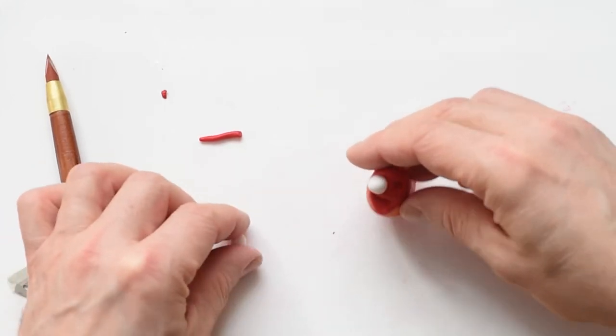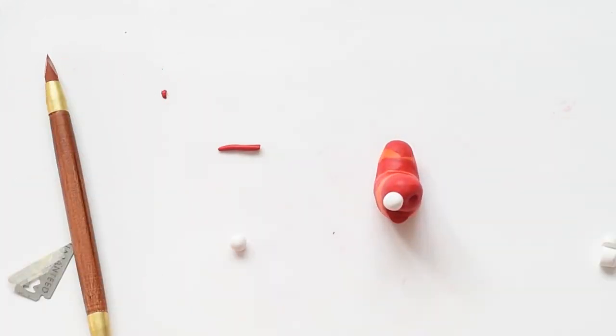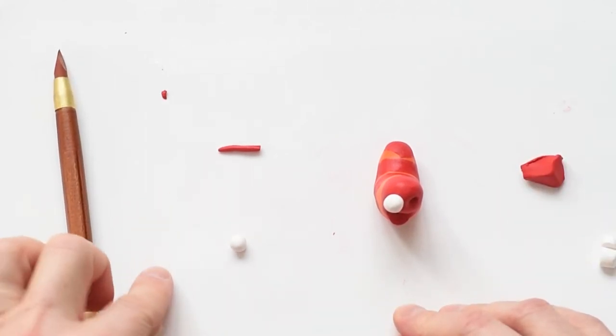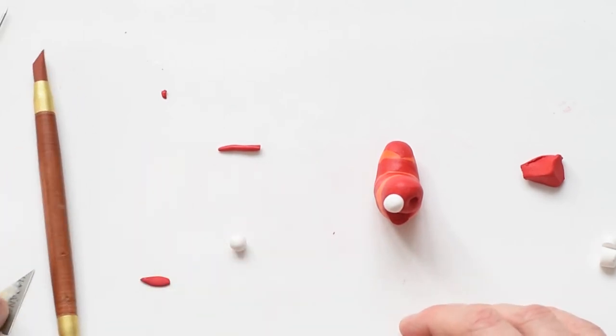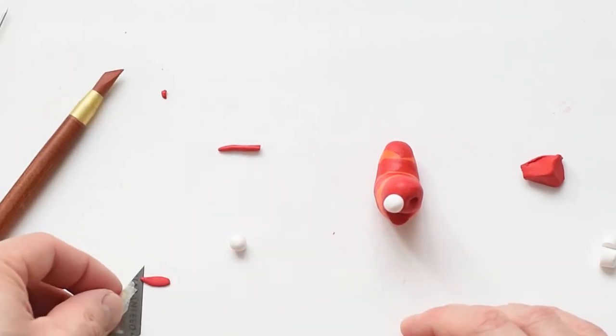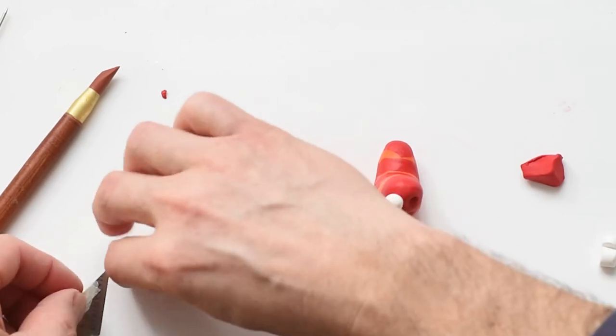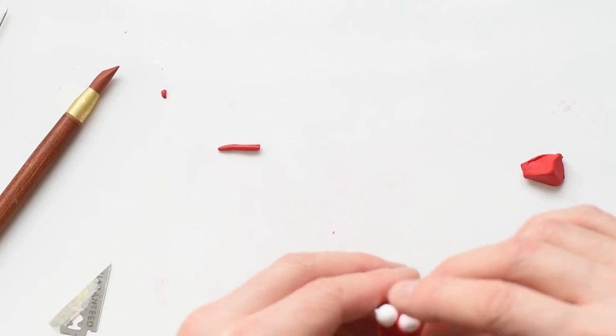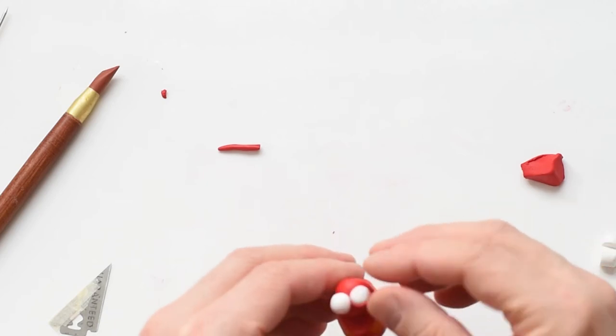I attach one eye, but the second eye I will make a red eyelid on it. So I roll a piece of red and then I attach it to the white. This makes the eyeball look much funnier.